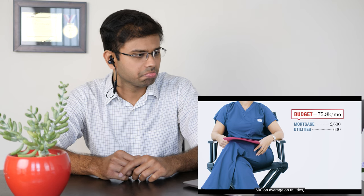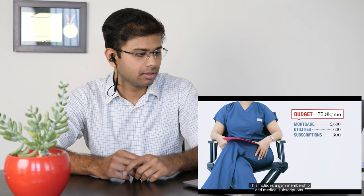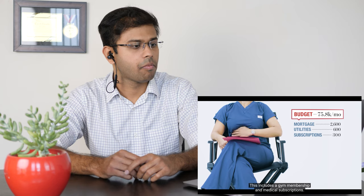After taxes, my take home is $75,833 a month. 80 times as much as I make. $2600 a month goes to my mortgage, $600 on average on utilities, and $300 on monthly subscriptions. This includes a gym membership and medical subscriptions.